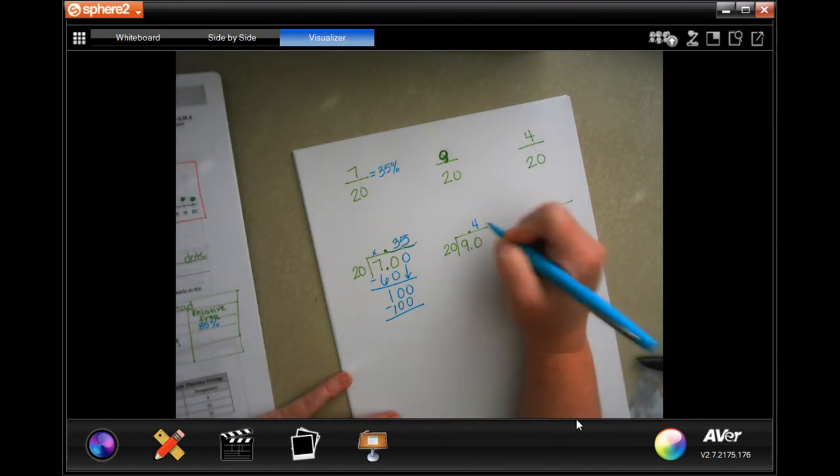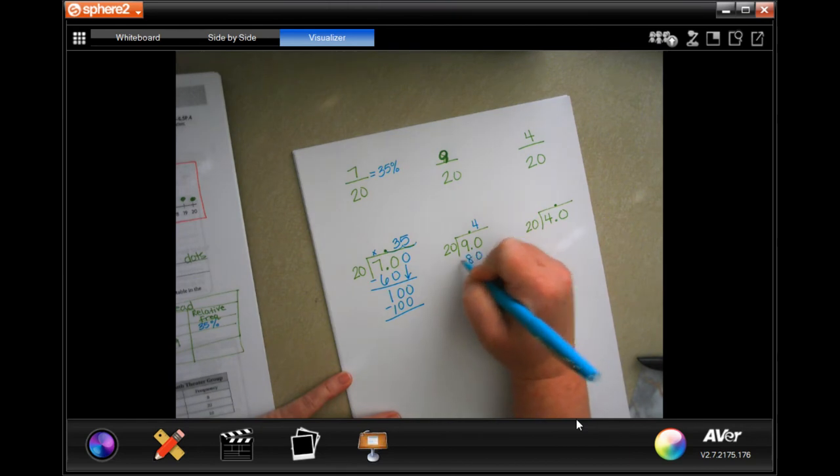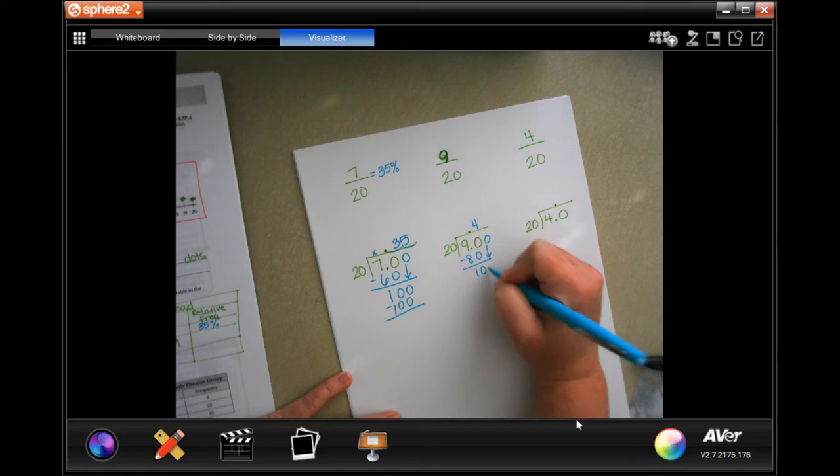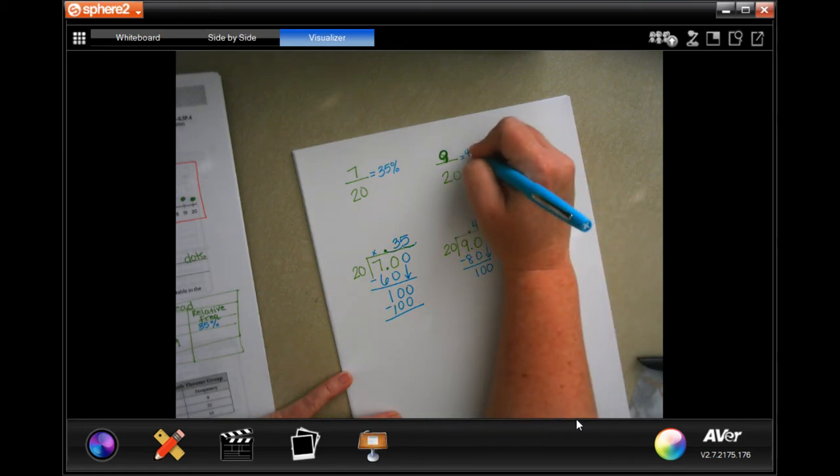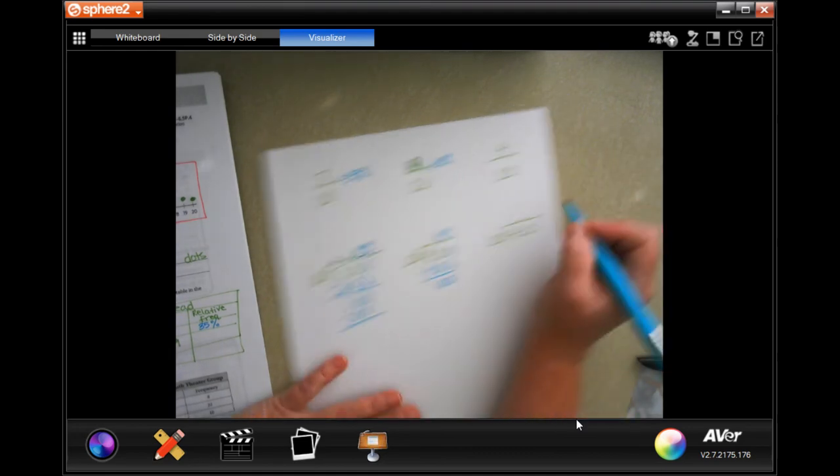Let's do the next one. 20 is going to go into 90 four times because that's 80. We're going to get 10 again, add that zero, bring it down. That's going to be five. That's 45 percent.